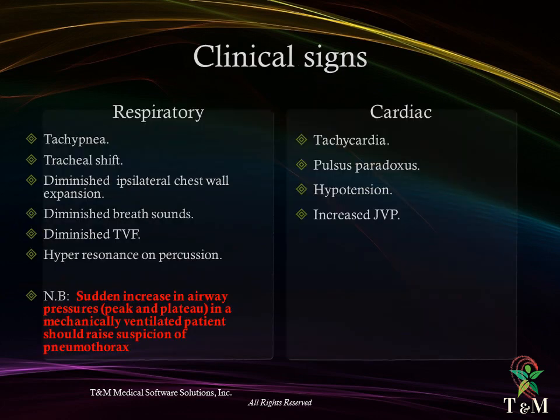Clinical signs — respiratory and cardiac. Respiratory signs include tachypnea, tracheal shift, diminished ipsilateral chest wall expansion, diminished breath sounds, diminished tactile vocal fremitus, and hyperresonance on percussion. An important note: patients on mechanical ventilation showing sudden increase in airway pressure, particularly peak and plateau pressures, should raise suspicion of pneumothorax. Cardiac signs include tachycardia, pulsus paradoxus, hypotension, and increased jugular venous pressure.